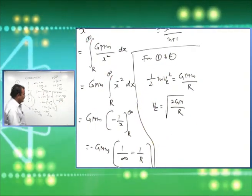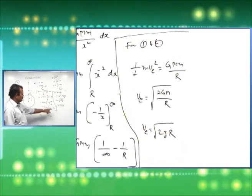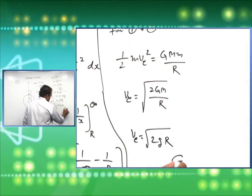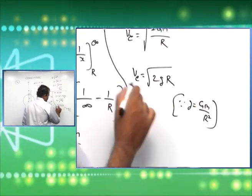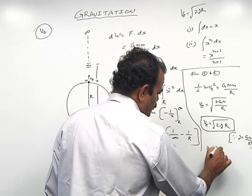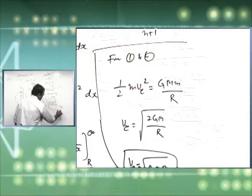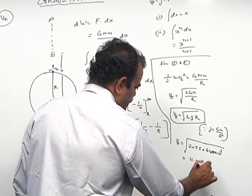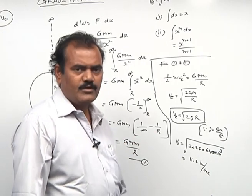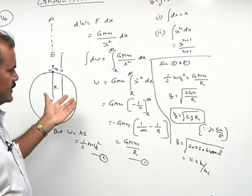Ve = √(2GM/r), and that also can be taken as Ve = √(2gR), because g = GM/r². Since g = GM/r², we can substitute to get Ve = √(2gR). When applying these values - g = 9.8, r = 6400 × 10³ - ultimately we get Ve = 11.2 kilometers per second. This escape velocity is independent of the mass of the body which is projected, but depends on the planet's mass and radius.